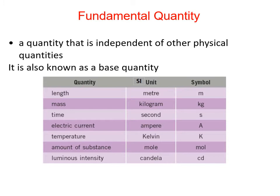There are seven fundamental quantities as shown in this table. We have length, mass, time, electric current, temperature, amount of substance, and luminous intensity. The SI units are also shown in the table. The SI unit for length is meter, for mass is kilogram, for time is seconds, for electric current is amperes, and for temperature is kelvin. You are also seeing in the table the symbols for each of the SI units — please note that these are the symbols for the SI units and not the symbols for the quantities.